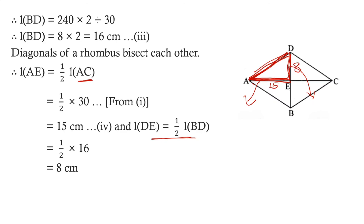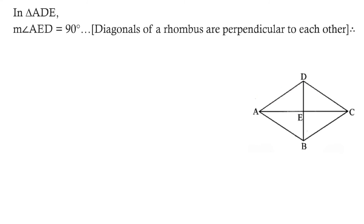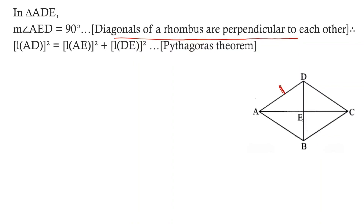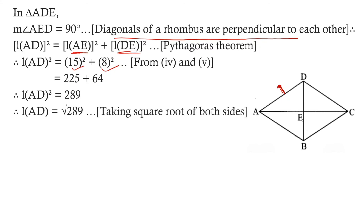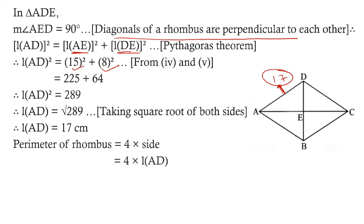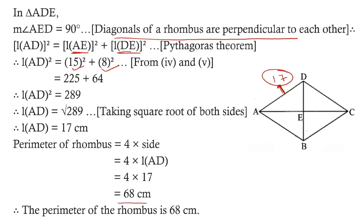Applying Pythagoras: AD squared equals AE squared plus DE squared, so AD squared equals 15 squared plus 8 squared equals 225 plus 64 equals 289. Therefore AD equals the square root of 289, which is 17 centimeters. Perimeter of the rhombus equals 4 into side equals 4 into 17 equals 68 centimeters. So the perimeter of the rhombus is 68 centimeters.